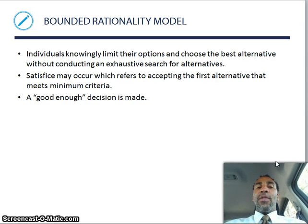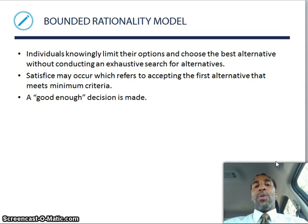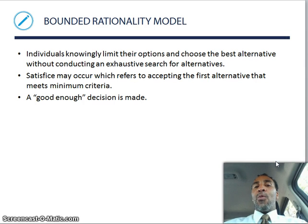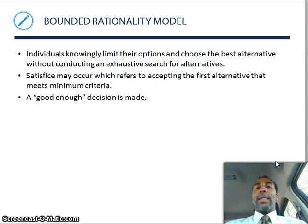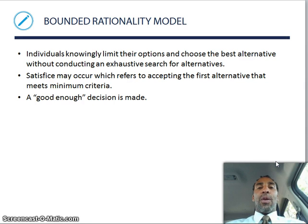The bounded rationality model: individuals knowingly limit their options and choose the best alternative without conducting an exhaustive search. Satisficing may occur — accepting the first alternative that meets the minimum criteria. For example, you go to the fridge wanting steak but you see meatloaf and say it's good enough. People do this with employment decisions too — they hire someone because they're good enough instead of holding out. Don't do it; it will hurt you in the long run.